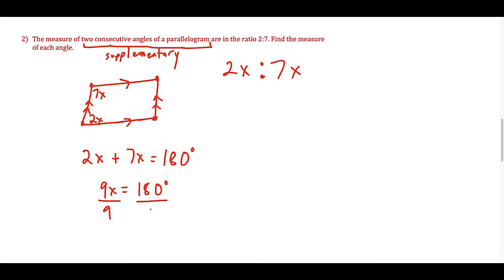Now we have 9X equals 180 degrees. When we divide by 9, we've got X equals 20 degrees. So when I want to actually solve for these angles, I could just plug back in. On the bottom in this left corner, 2 times 20 degrees is 40 degrees.